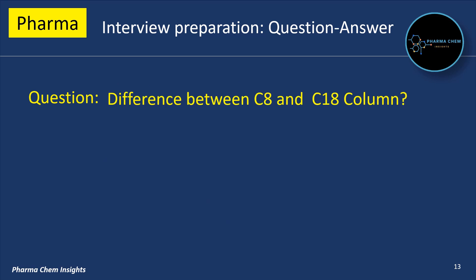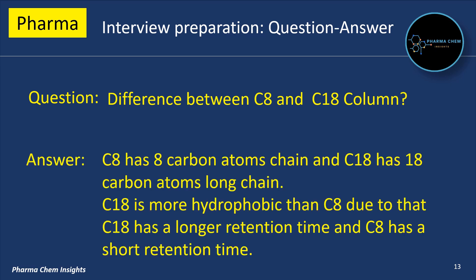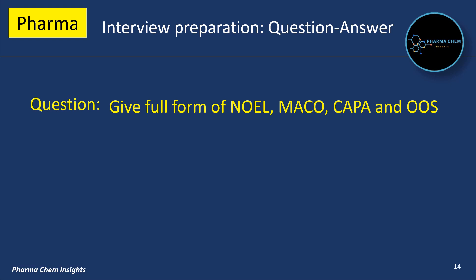Next Question: Difference between C8 and C18 column. C8 has an 8 carbon atom chain and C18 has an 18 carbon atom long chain. C18 is more hydrophobic than C8; due to that, C18 has a longer retention time and C8 has a shorter retention time.